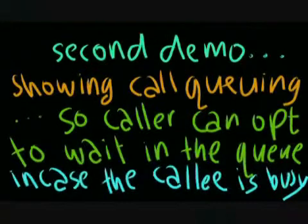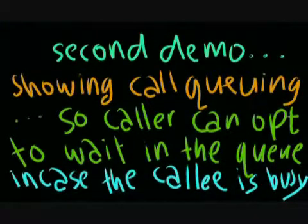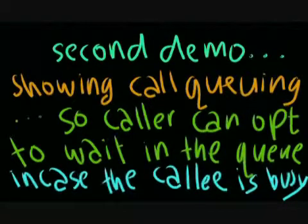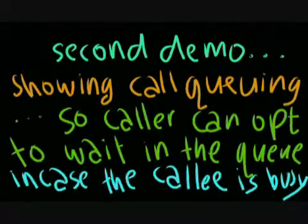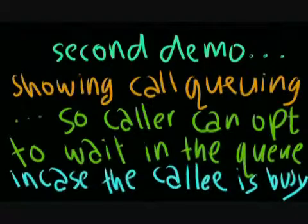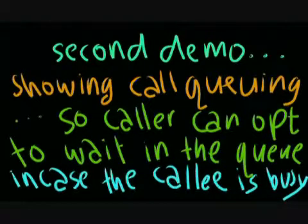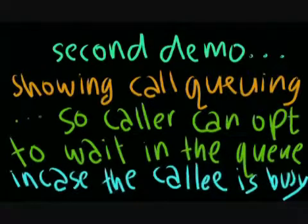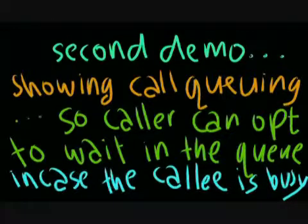Let's move on to the second demo, showing the call queuing feature. With this feature, the caller can opt to wait in the queue in case the called person is currently busy. After a specified amount of time — which is 30 seconds in our case — the SIP surflet will retry dialing the called person. If this time the called person is free, the caller will be automatically taken out of the queue, assuming he is currently the first one in the queue.